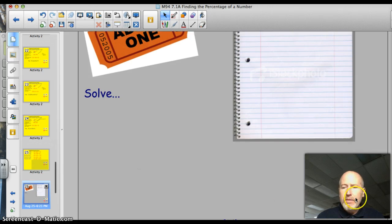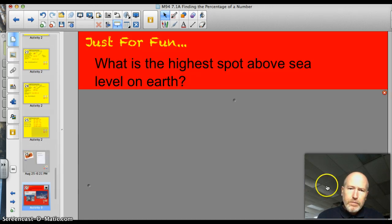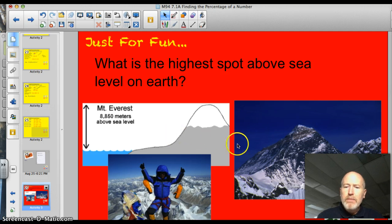All right, let's get to the trivia question of the day. What is the highest spot above sea level on Earth? Survey says, I bet you a lot of you knew the answer. It is Mount Everest right here, the summit of Mount Everest. Mount Everest is 8,850 meters above sea level. So from the sea to the top of the summit of Mount Everest, 8,850 meters.